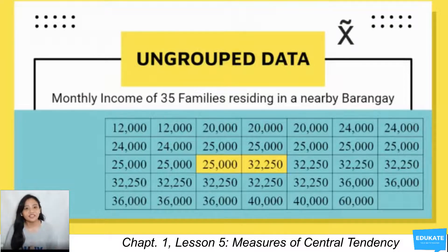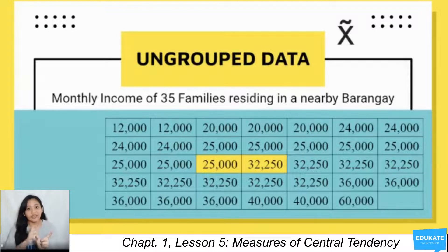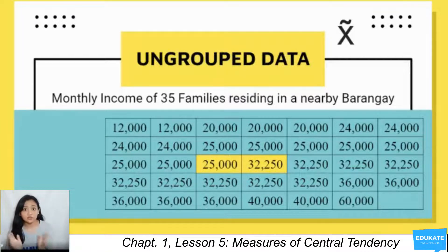If we remove one data point, we have an even number of 34 observations. The median is then the average of the two middle values. With 34 observations, divide by 2 to get the 17th position, so the two middle values are the 17th and 18th observations. In our ungrouped data, the 17th observation is 25,000 and the 18th is 32,250. Adding them and dividing by 2 gives a median of 28,625.